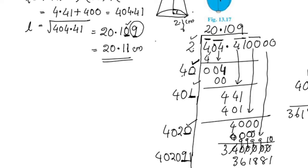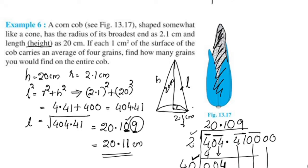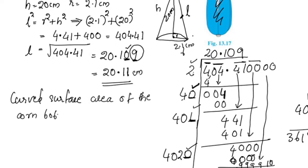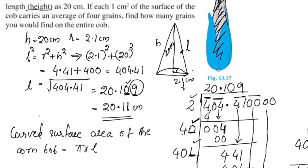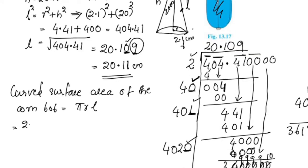Now the curved surface area of the corn cob is equal to π r l. We have π = 22/7, r = 2.1 cm, and l = 20.11 cm.